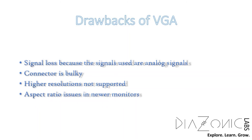The final drawback is the aspect ratio. VGA monitors are designed for a 4:3 aspect ratio, while newer monitors use 16:9 — 16 times on the horizontal and 9 times on the vertical. If you use a 4:3 connector on a 16:9 monitor, the image will be stretched or shrunk depending on the different monitor sizes.